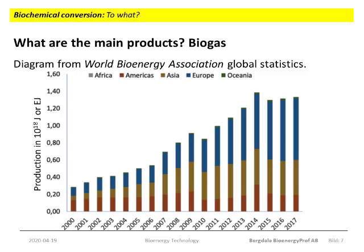The diagram in this slide originates from the same source and shows the total energy supplied from biogas, again worldwide. The scale is exajoule - that is, million million million joules. The total volume represented in the diagram is about 61,600 million cubic meters. That is about 9 cubic meters per person per year worldwide. The total energy is almost what is used in Sweden. So, biogas is another major product, and again it is produced through a biochemical conversion process.